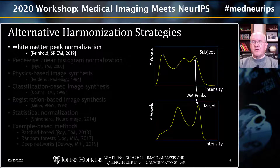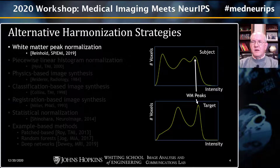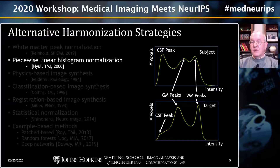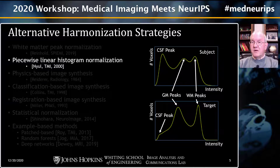The reason for this is that this particular subject has very large ventricles and really shouldn't have the same representative tissue quantities as the target images. There have been alternative strategies proposed. For example, white matter peak normalization analyzes the histograms, finds the white matter peak, and aligns it with a particular number in the final image. You can do a bit better by analyzing the histogram to find other representative peaks such as CSF and gray matter, and aligning those in a piecewise linear histogram normalization scheme.